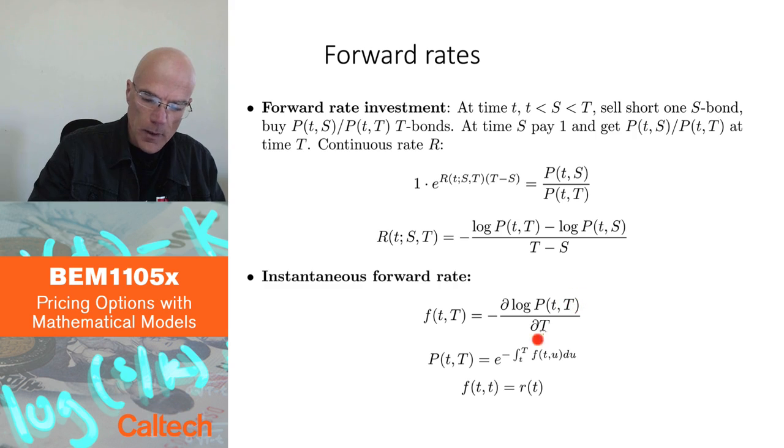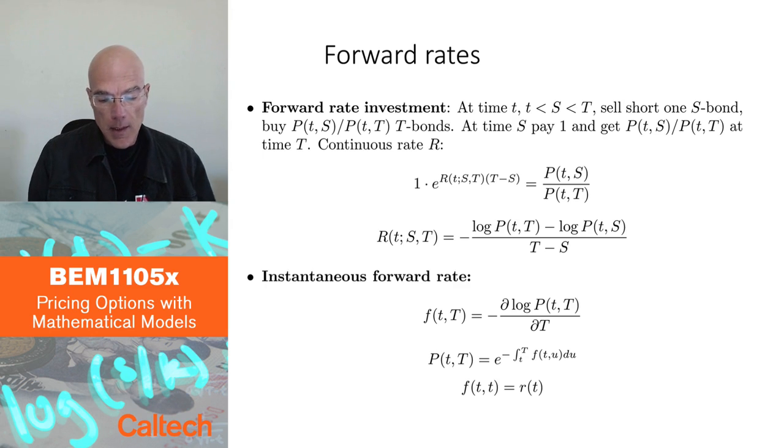So instantaneous forward rate is defined as the limit of this when S goes to T and that limit is exactly minus the derivative of the log of the bond price, but the derivative with respect to maturity. Today is fixed. What we are differentiating with respect to is the maturity. And if I write this a bit differently, if I integrate and then get rid of the log by taking exponentials, this is the same as saying that the bond price is equal to e to the minus integral from t to capital T, f(t,u), integrated over maturity, f(t,u) du.